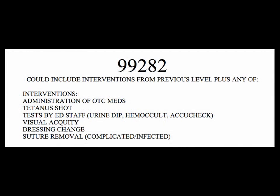Code 99282 represents a level 2. It is a low risk — low risk of morbidity without treatment, little to no risk of mortality without treatment, and full recovery without functional impairment is expected. These include things like administration of over-the-counter medications like Motrin or Tylenol, a tetanus shot, tests done by the ED staff like urine dips, hemocults, accuchecks, visual acuity, dressing change, and suture removal for more complicated, potentially infected sutures.